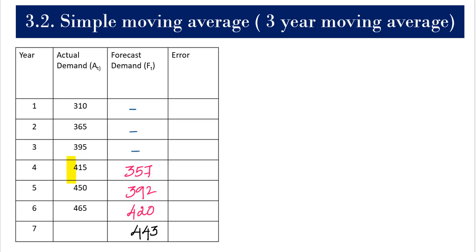Looking at the fourth year data, the actual demand was 415 and the forecasted demand was 357, which means there is a large variation in the way we have forecasted. This difference in forecasting we call an error. Let's calculate the error for the given information.